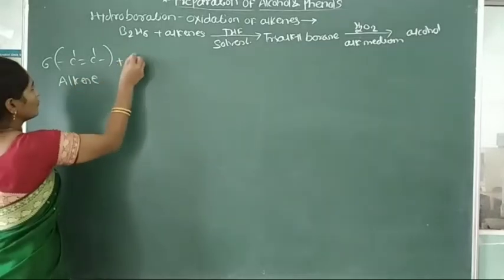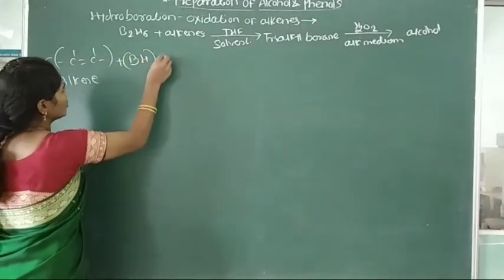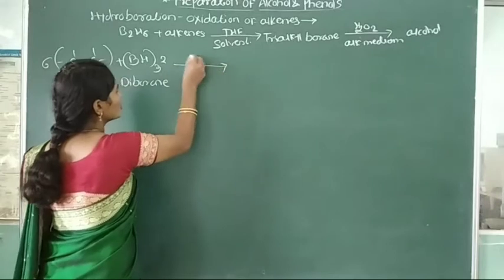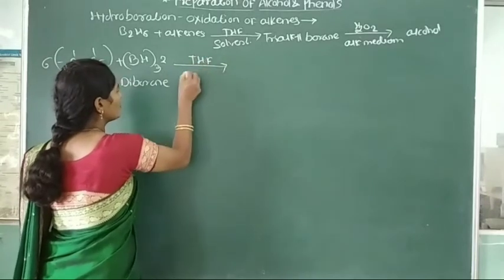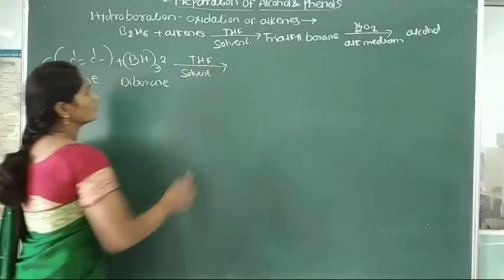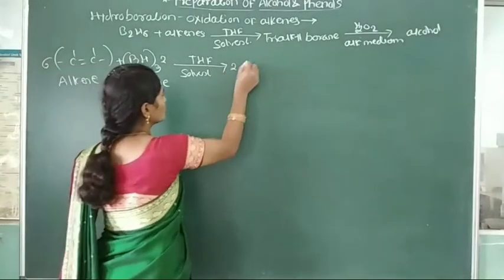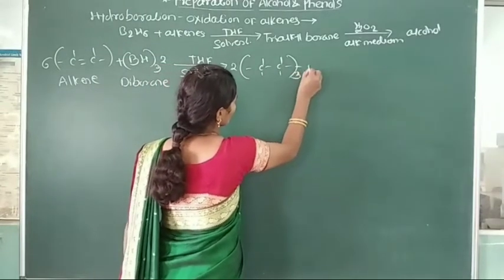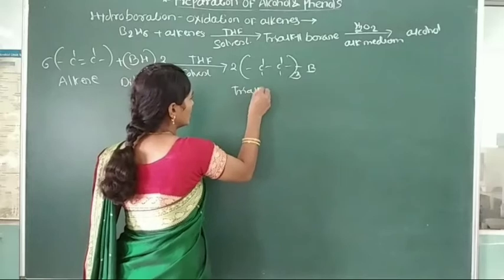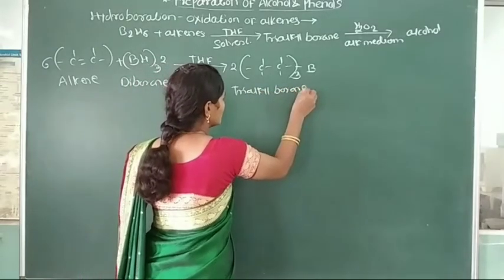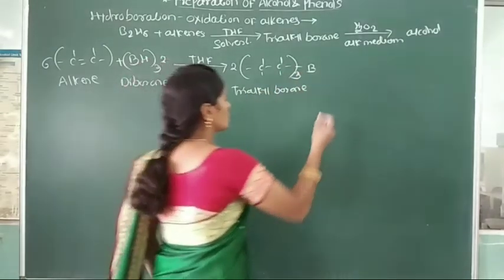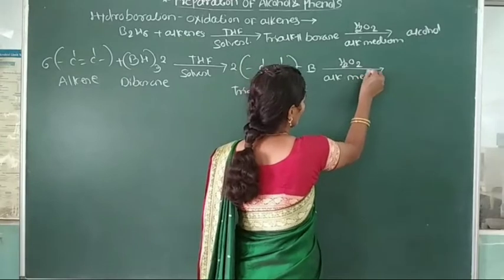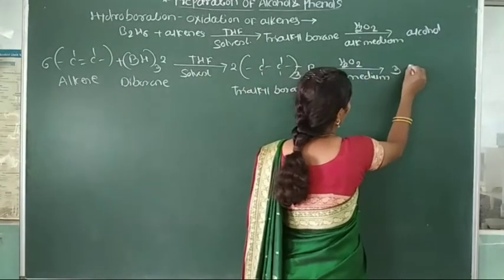We see some examples. Six molecules of alkene are treated with diborane, B2H6 twice. Alkene treated with diborane in presence of tetrahydrofuran solvent gives trialkyl borane. Here formation of 2 molecules of trialkyl borane. It is called as trialkyl borane.